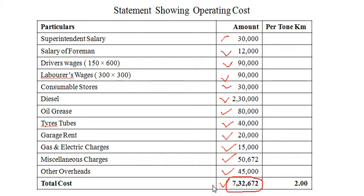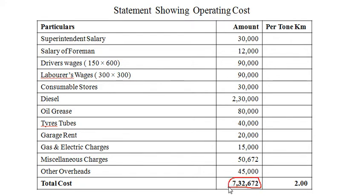Dividing total operating cost Rs. 7,32,672 by monthly ton kilometres 3,66,336, we get cost per ton kilometre = Rs. 2. That's all.